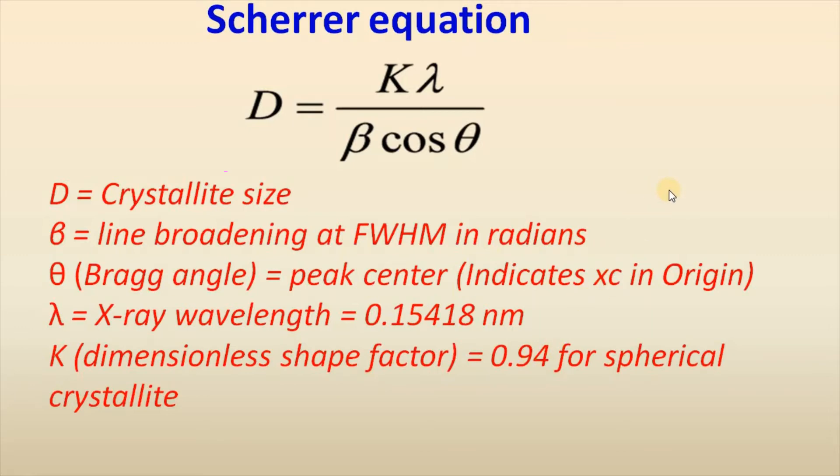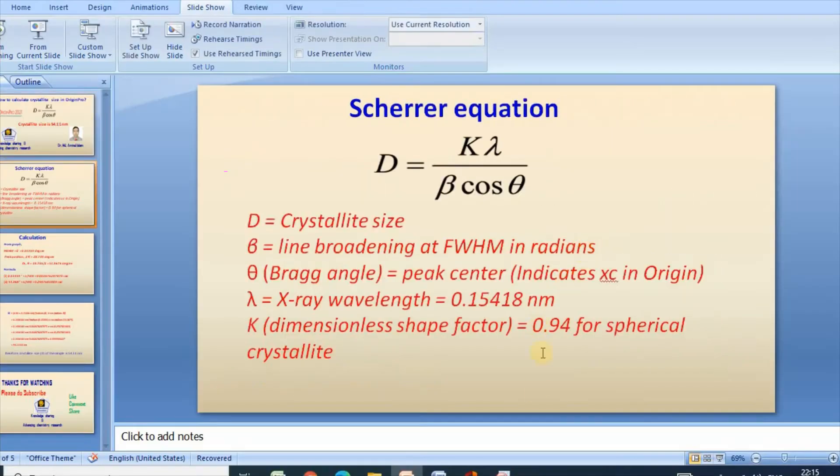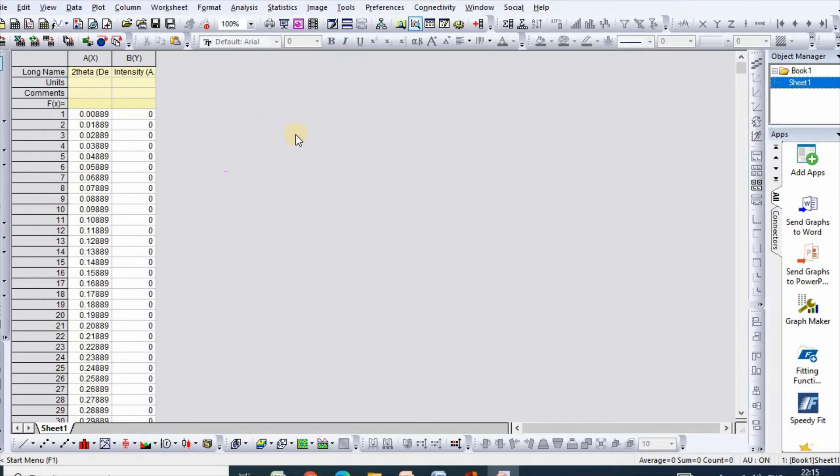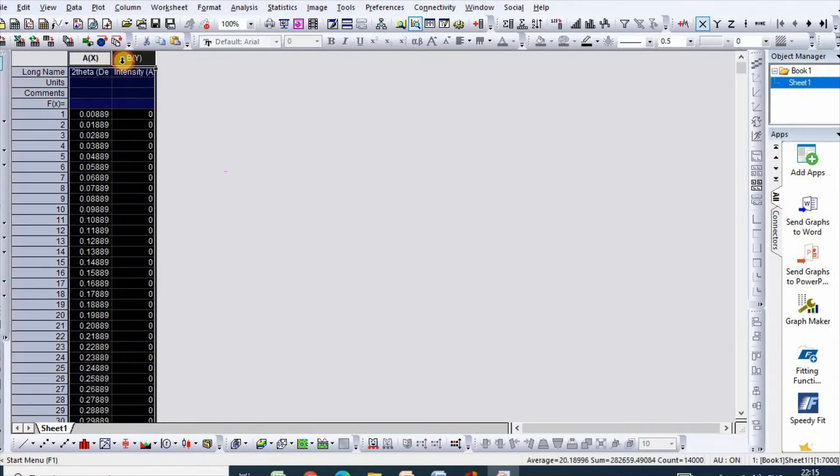In order to draw this I would like to take it to the Origin. In order to plot XRD graph I have taken my XRD data from Excel sheet to Origin. Here is my data. And it is mentionable that here X axis is twice theta in degree, whereas intensity is Y axis. It is arbitrary unit.